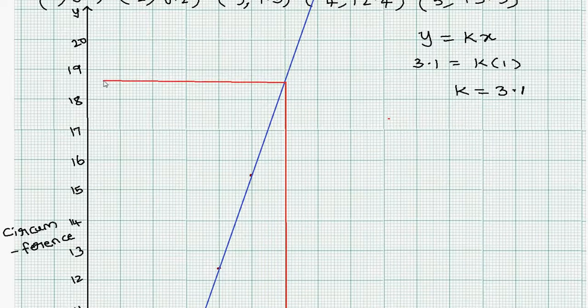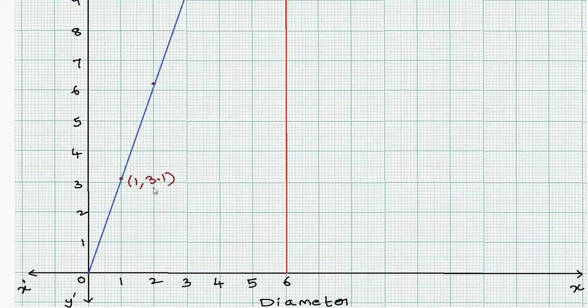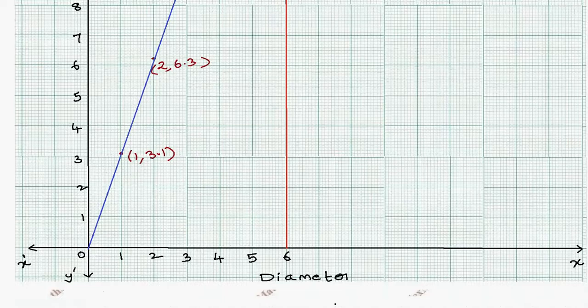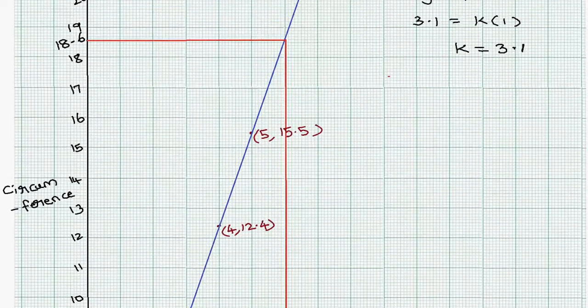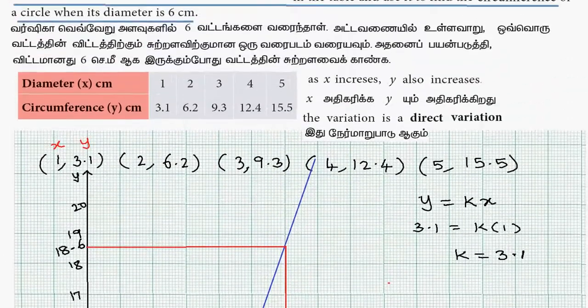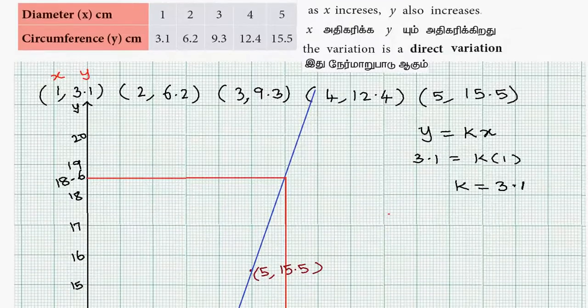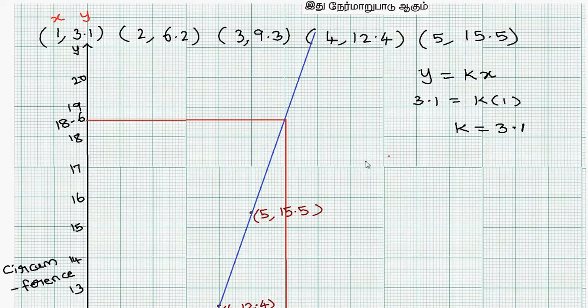The y-axis is the circumference axis. On the graph, the point is 18.6. So all points we plot, circumference is 18.6.